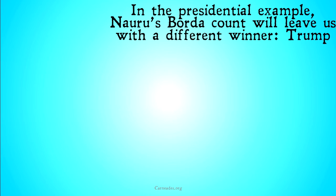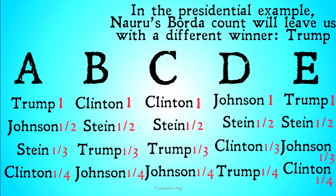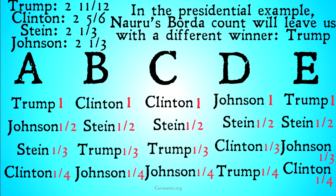Take a look at the presidential example. Nauru's Borda Count will leave us with a different winner. Trump is going to be declared the winner, with two and eleven-twelfths points. Clinton will have two and five-sixths points. Stein two and one-third, and Johnson two and one-third as well. Feel free to check my math. It seems that Trump outscores all other candidates and would be declared the winner under this voting system.